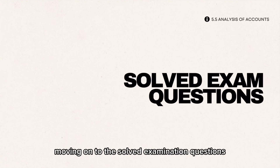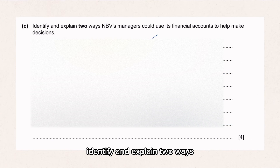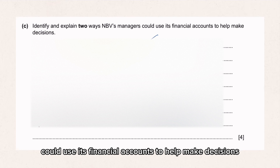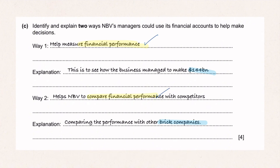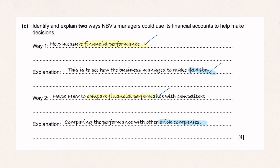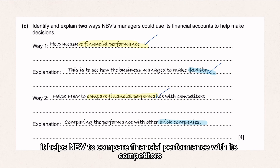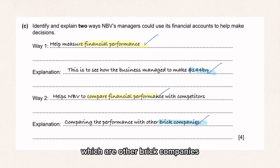Moving on to the solved examination questions. Identify and explain two ways MBV's managers could use its financial accounts to help make decisions. Way one is to help measure financial performance — just to see how they made $144 billion. Secondly, it helps MBV to compare financial performance with its competitors, which are the BRIC companies.